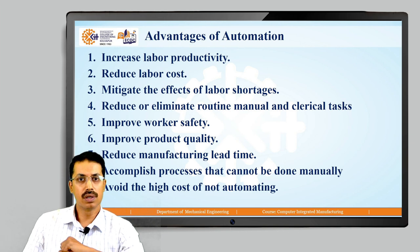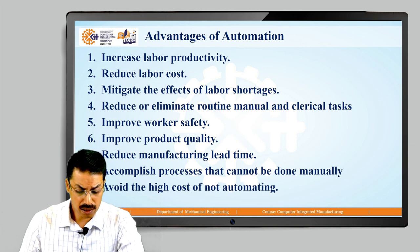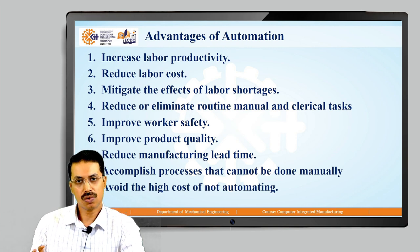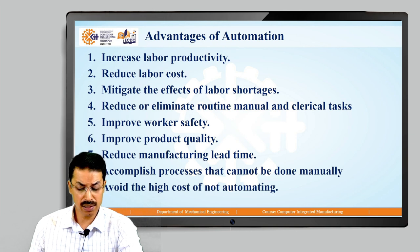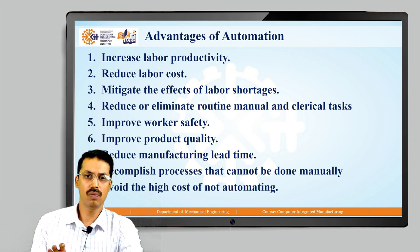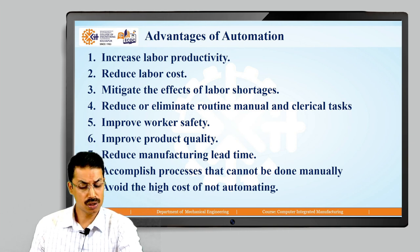The next point is reduced labor cost. Higher investment in automation has become economically justified to replace manual operations. Machines are increasingly being substituted for manual labor to reduce unit product cost — wherever a manual worker is required, we replace that worker with automatic machines, reducing per-unit production cost.